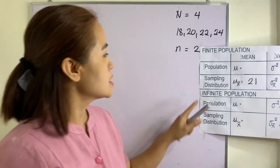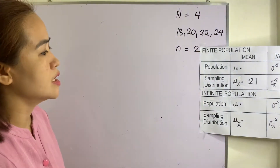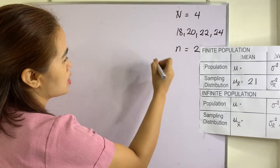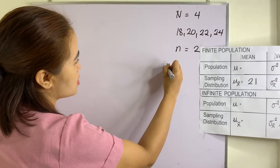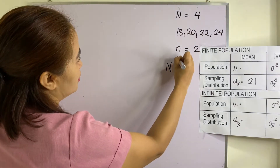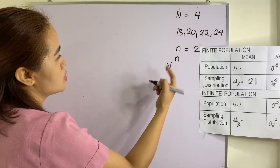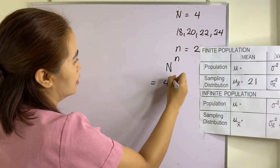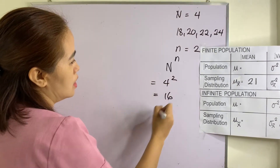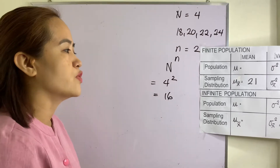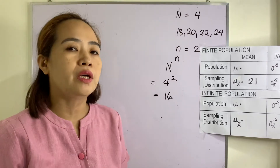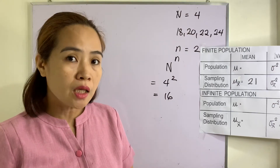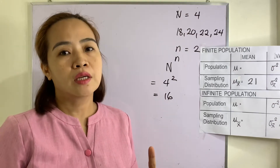Let us now go to the second case, which is the infinite population. In determining the possible samples, we use the formula N raised to n — big N raised to small n. So this one is 4 squared, which is equal to 16. Take note that this is for infinite population and that is with replacement, meaning the entries can be replaced.